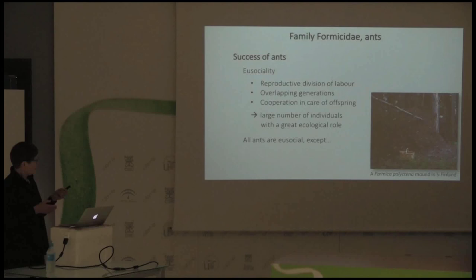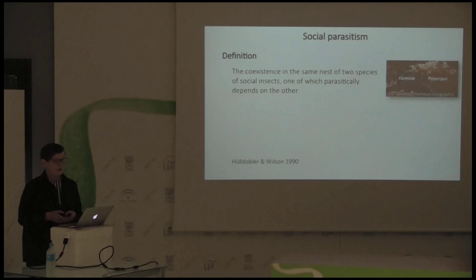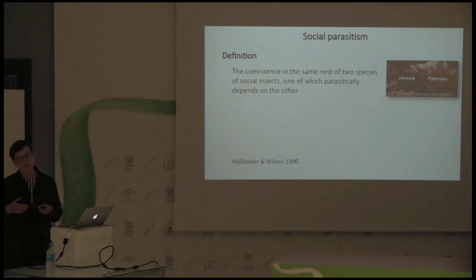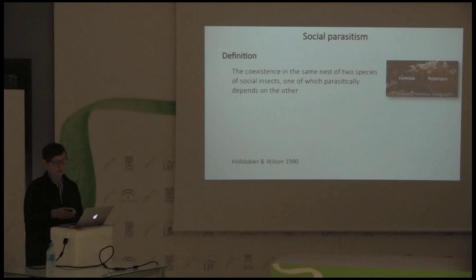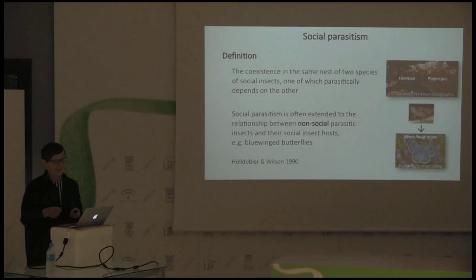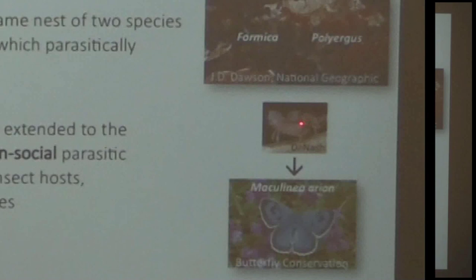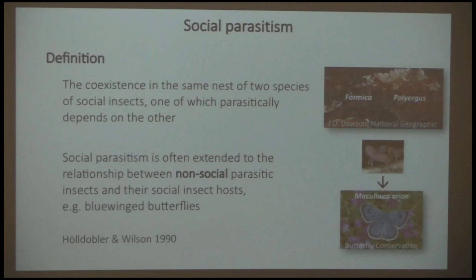All ants are eusocial except some parasites that have lost those features. Social parasitism means the coexistence in the same nest of two species of social insects, where one species is parasitizing the other. It is also extended to include some non-social insects that utilize a social insect — a good example being lycaenid butterflies like the large blue, whose larva must be picked up by an ant worker, carried into the nest, and then starts eating ant offspring.